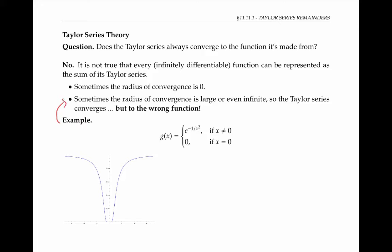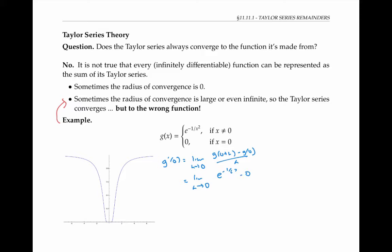Here's an example of the second situation. If we look at this piecewise defined function, g of x is defined as e to the minus one over x squared, if x is not zero, and it's defined to be zero when x equals zero so that it's continuous at zero. When x equals zero, it's possible to work out the value of g prime at zero using the limit definition of derivative. g prime of zero is the limit as h goes to zero of g of zero plus h minus g of zero over h, which is the limit as h goes to zero of e to the minus one over h squared minus zero over h.